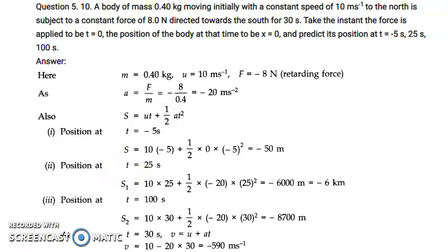So the body has a mass of 0.4 kg. Its speed is in the north direction — 10 meters per second. The force applied is 8 N towards the south, and this force is applied for 30 seconds. The force begins to be applied at t = 0.